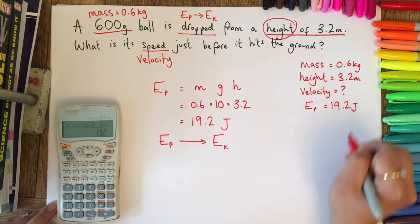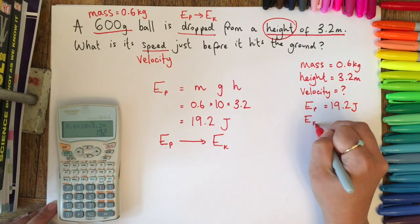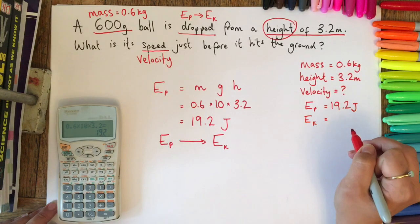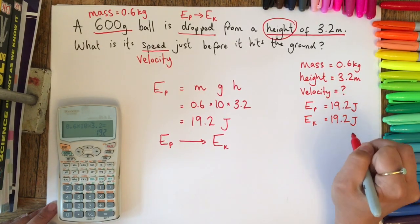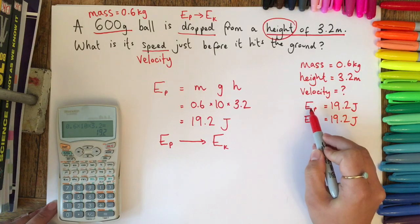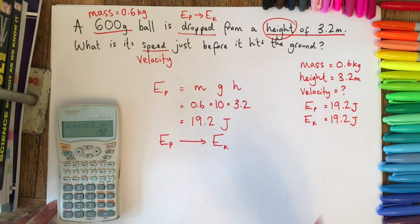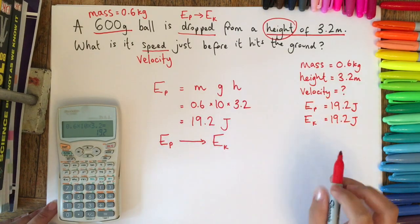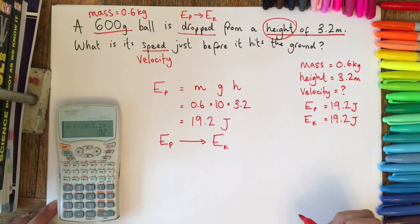With our list here, we could add that the potential energy, because we've calculated it, is 19.2 joules. We can then assume that therefore its kinetic energy by the time it gets to the bottom of its fall is also 19.2 joules, because all of this potential energy will have been converted into kinetic energy.